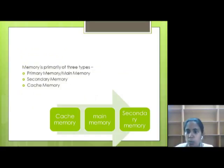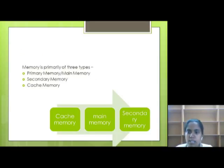Now we will discuss about the types of memory. Basically, memory is of three types: primary memory, secondary memory, and cache memory.